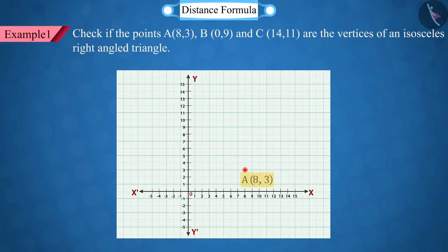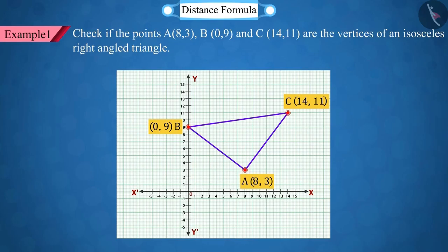Check if the points A(8,3), point B(0,9), and point C(14,11) are the vertices of an isosceles right-angled triangle.